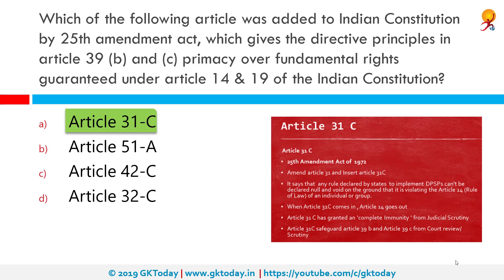Article 31C had two parts. The first part protected a law giving effect to the policy of the state towards securing the principles in Article 39B and C from challenges on grounds of infringement of fundamental rights. The second part originally sought to oust the jurisdiction of the courts to find out whether the law in question gave effect to the principles of Article 39B and C.